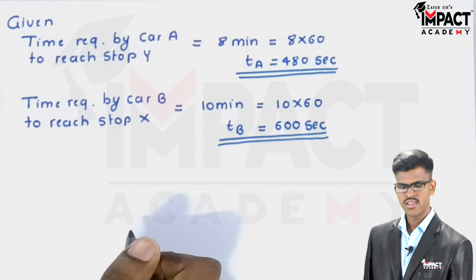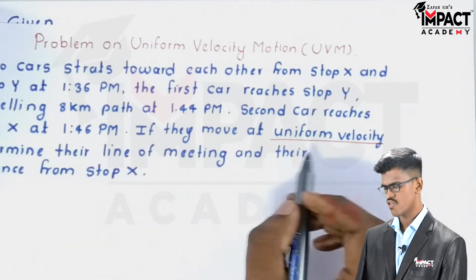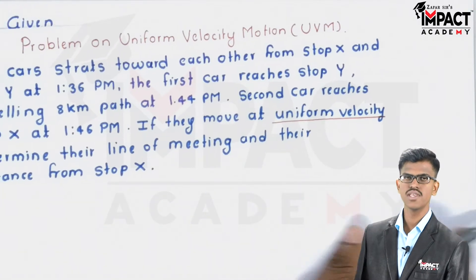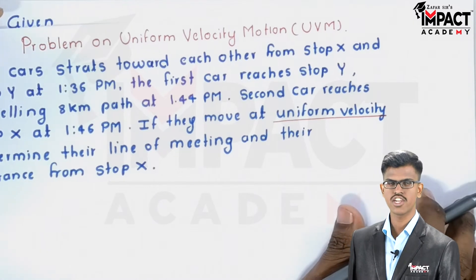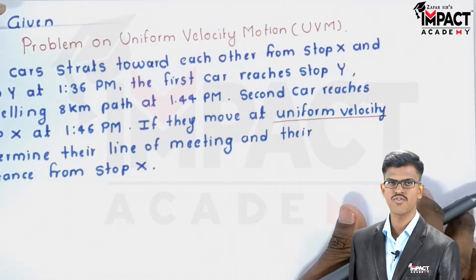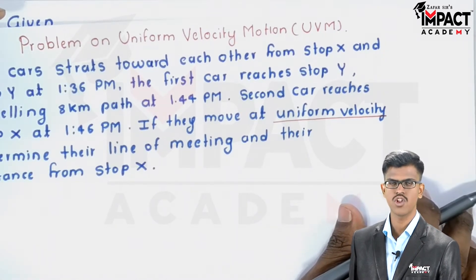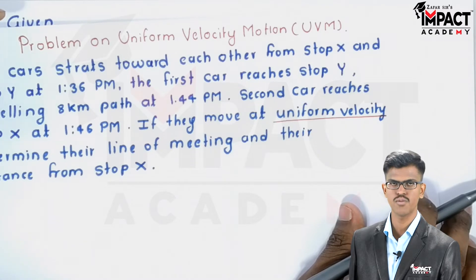In this problem, the motion is uniform velocity motion, meaning there is no change in the rate of change of velocity. Velocity remains constant throughout the motion.